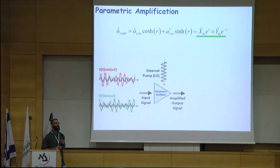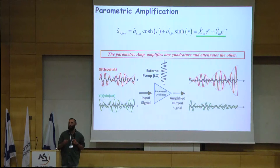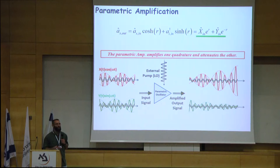So if we have an input which is a combination of both quadratures x and y, the output of the amplifier will amplify the x while attenuating the y, the sine quadrature in this case. We can choose the specific quadrature we want to amplify by tuning the phase of the pump, which in this case acts as a local oscillator. The homodyne idea is simple: simply amplify whichever quadrature you want to measure.